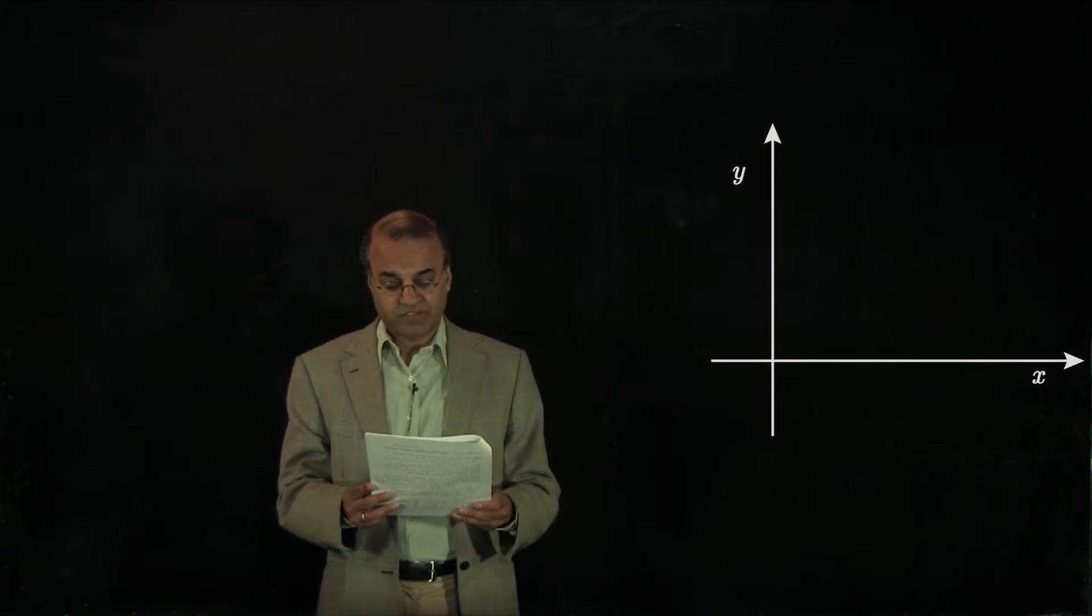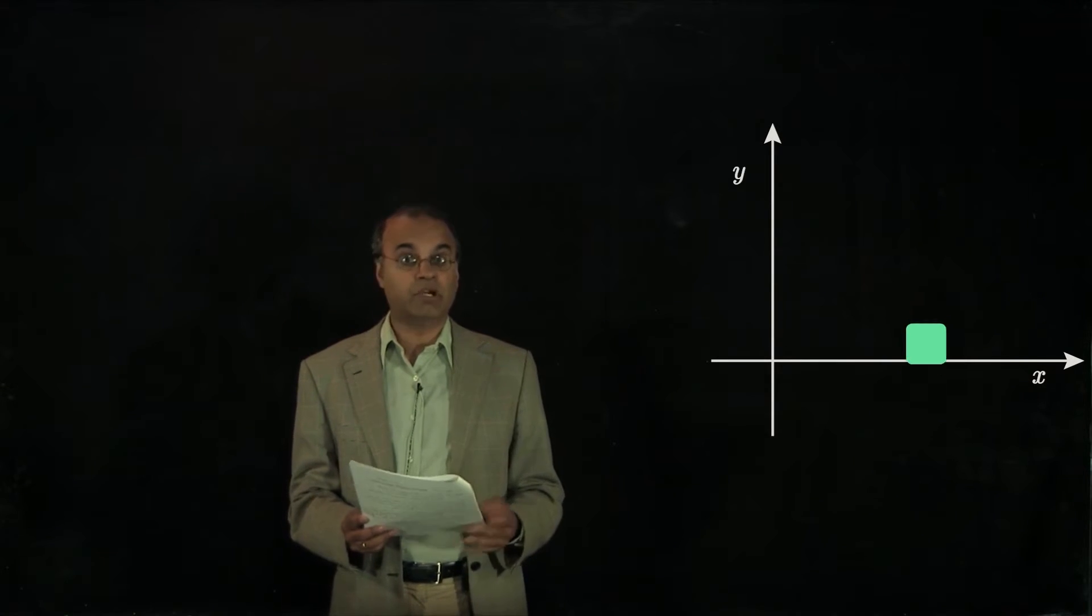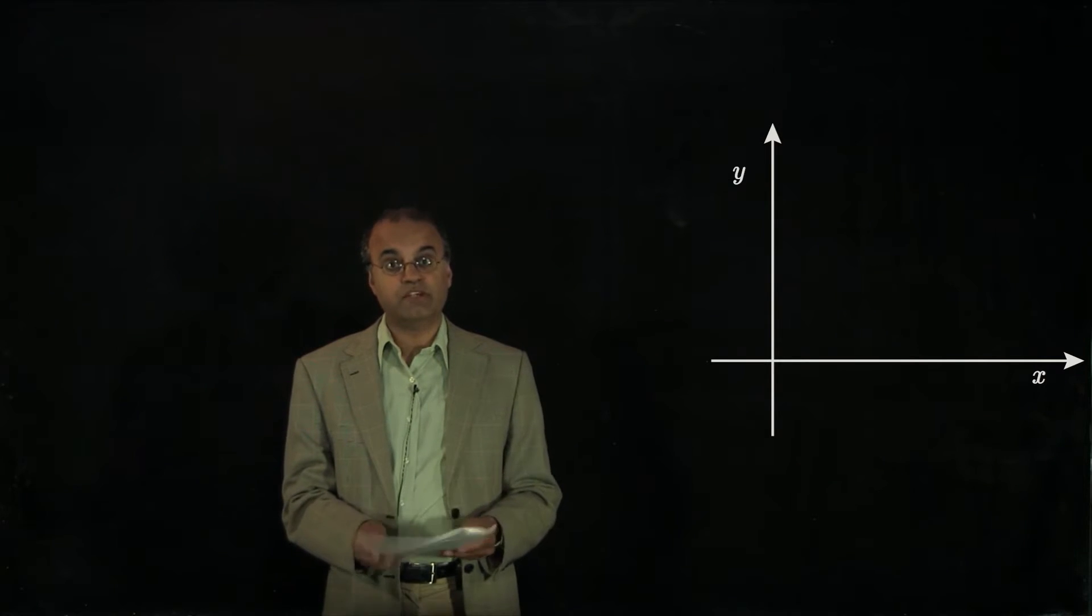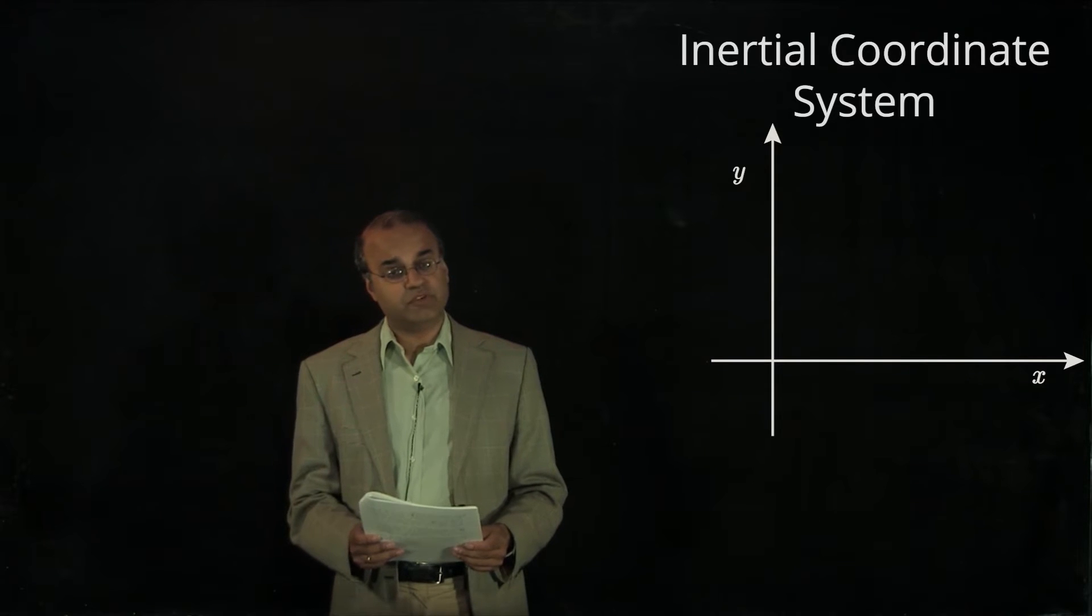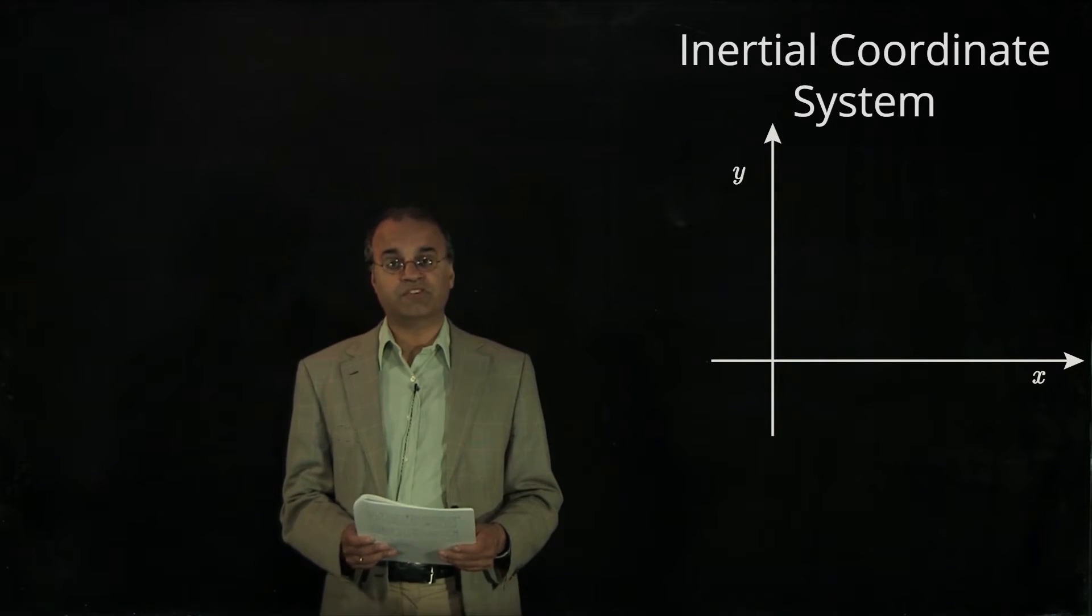It turns out that it's always possible to define a coordinate system in which an isolated body moves at constant velocity, perhaps zero. Such a coordinate system is called an inertial coordinate system. Another way of stating Newton's first law is that inertial coordinate systems exist.